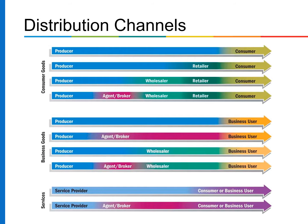To the consumer, or through a channel with multiple intermediaries. Looking at the exhibit showing consumer goods: Channel 1 moves the product directly from producer to consumer. In Channel 2, a retailer acts as intermediary between producer and consumer. In Channel 3, there is a producer, wholesaler, retailer, and then consumer. In Channel 4, you can see producer, agent/broker, wholesaler, retailer, and consumer. The same structure applies to business goods.